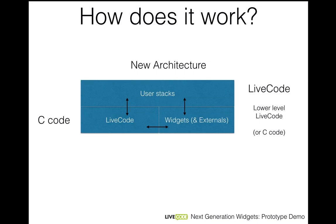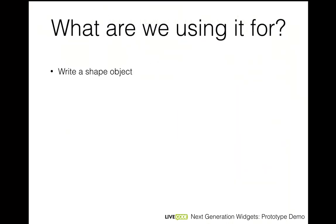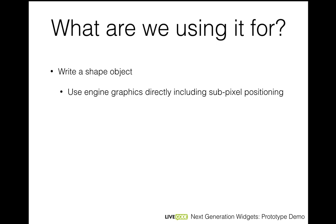A widget can contain anything, so it doesn't just have to be a simple PDF. You'll be able to access our graphics library directly and render very complicated controls. One of the first things we're going to do is write a shape object using the widgets architecture, which will allow us to hook into the engine graphics directly using the subpixel positioning that's in the graphics library but isn't yet exposed at the user level. Because we're tying directly into the engine functions instead of the OS, it will be completely cross-platform. The same shape object will be written once and will enjoy all the benefits that LiveCode has — you won't have to change it as you move between different platforms.